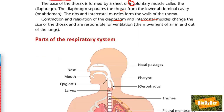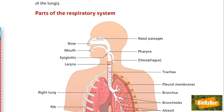Parts of the respiratory system: starting with the head, there is your nose and your mouth. Nasal passages lead from your nose to the back of your throat, and these are lined with mucous membranes and little hairs called cilia. The pharynx is another word for your throat. The epiglottis is a little lid that covers the windpipe when you're eating food, so that when you swallow, food goes down your food pipe instead of your windpipe, avoiding the danger of choking.